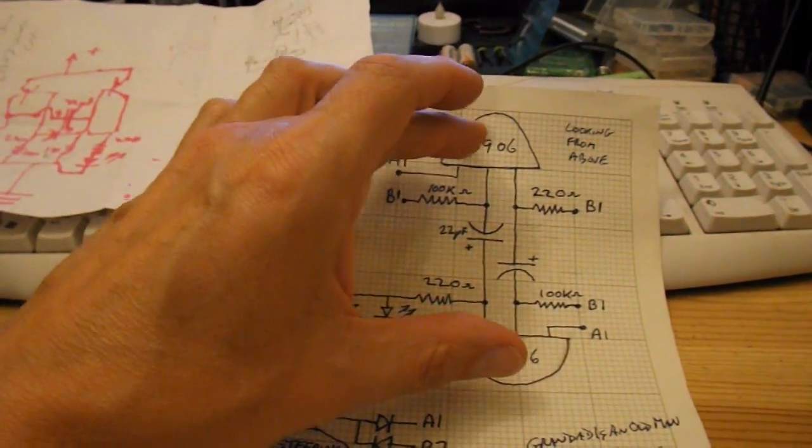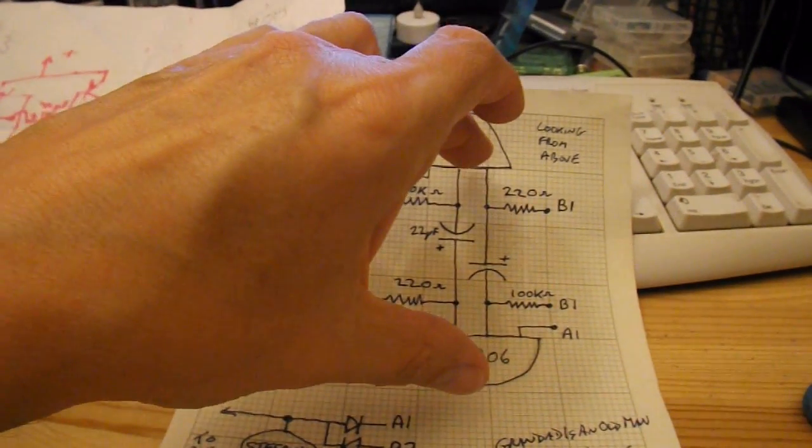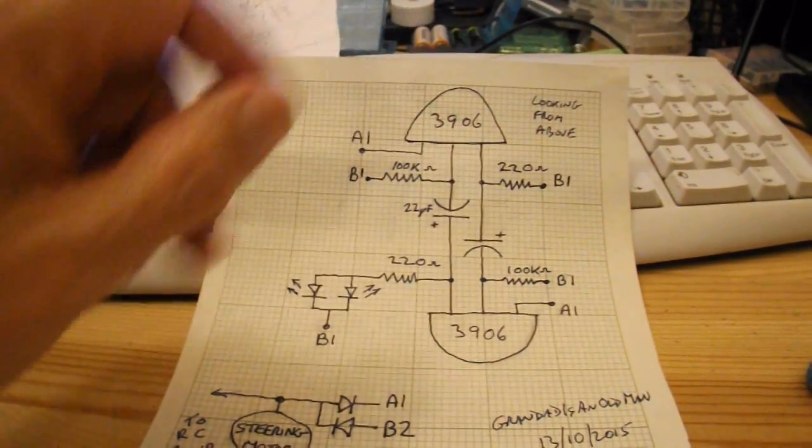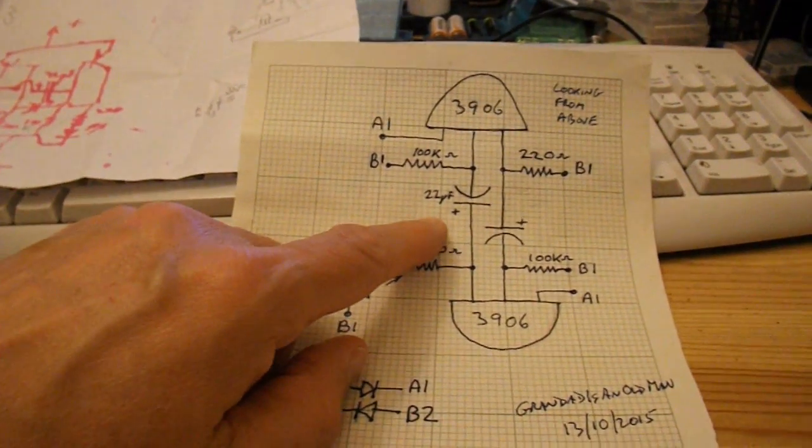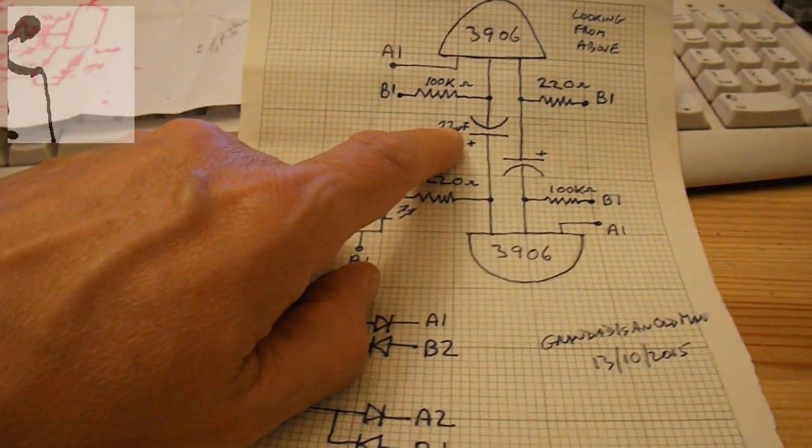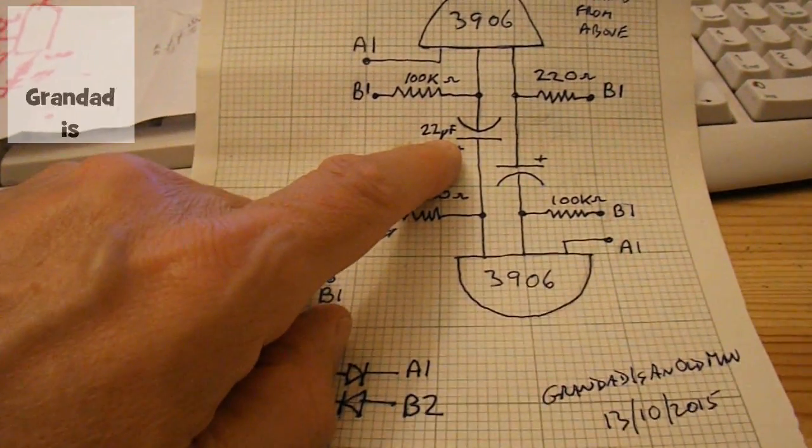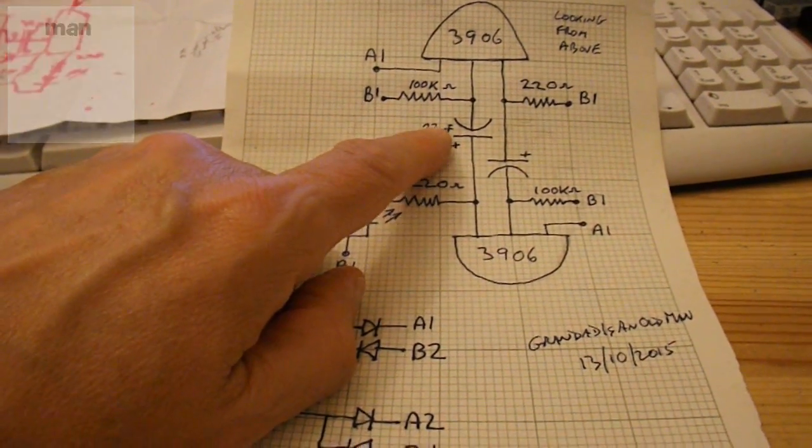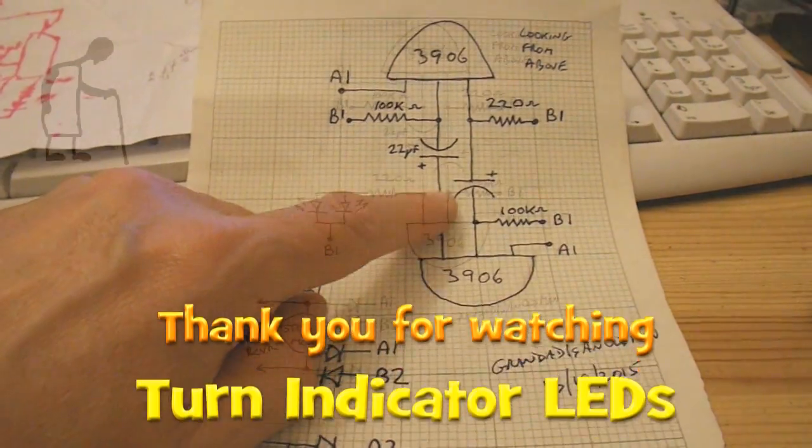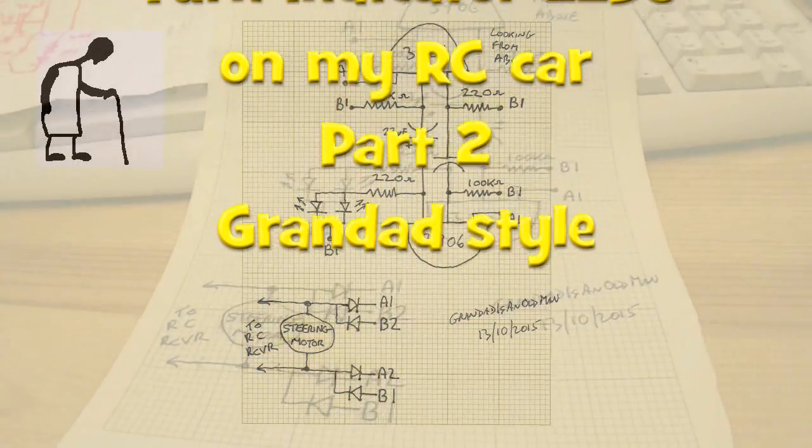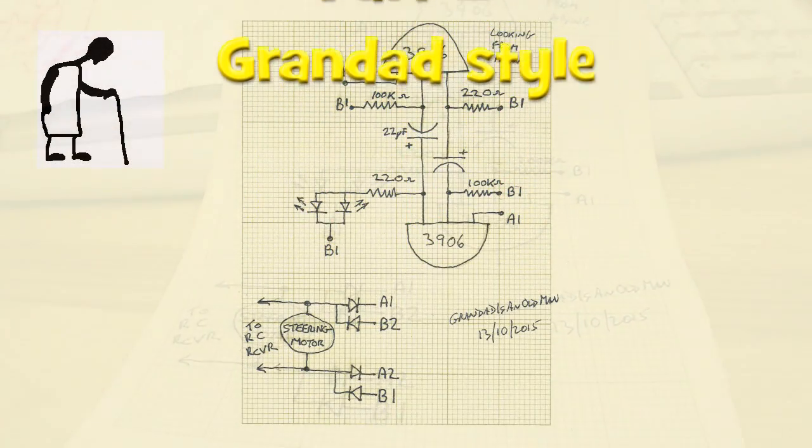That probably made no sense at all, but I'll scan it in. And I've drawn it as if you were looking at the top of the transistors, and they're 3906 transistors. The capacitors—I'm not sure what value I actually used. On the original diagram it said 22, is that microfarads? I just used whatever made them flash at the right rate. I'll scan that in now and add it to the end of the video.